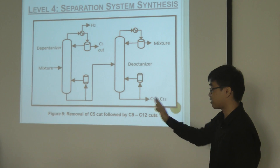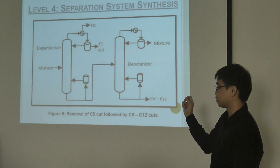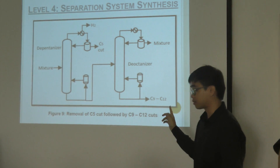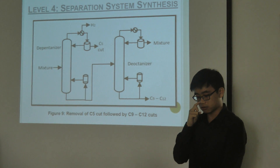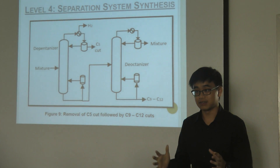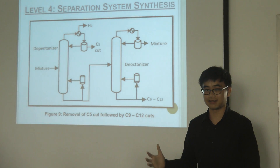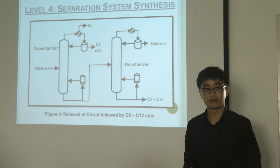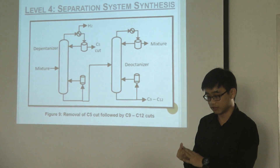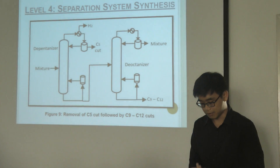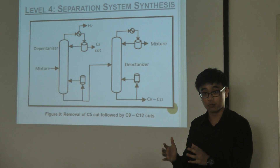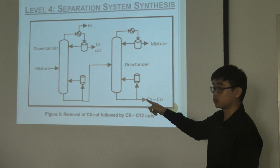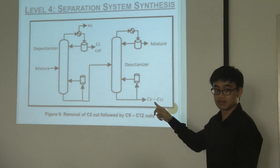This is the direct sequencing of distillation columns where the bottom product is transferred to the next column for further processing. Lightest or most hazardous components should be removed first. The bottom product is directed to the next distillation column for further separation.